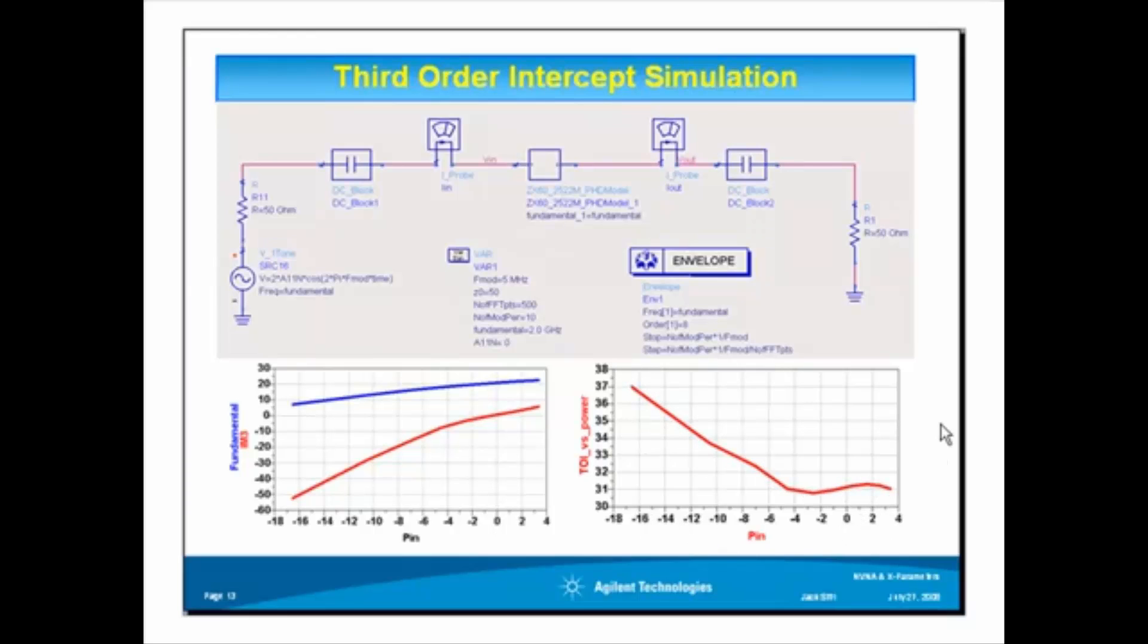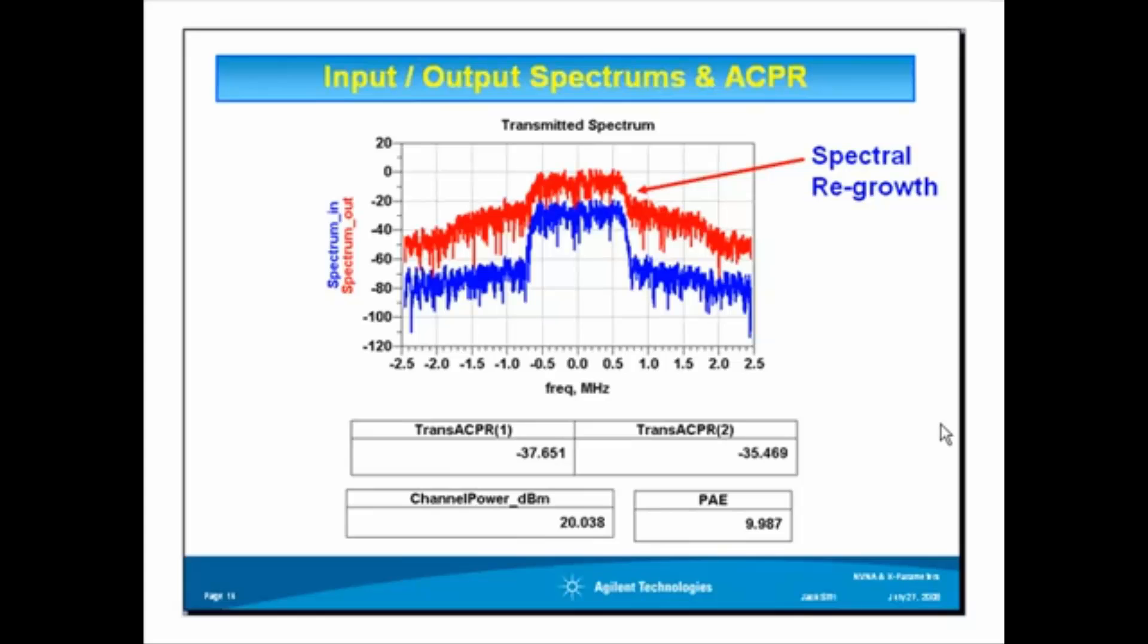Here's another example of using ADS circuit envelope to generate ACPR with channel power and power added efficiency. Notice right here is the nonlinear behavior or spectral regrowth at the output, right at the edge of the channel, which can be improved by linearization techniques in ADS.